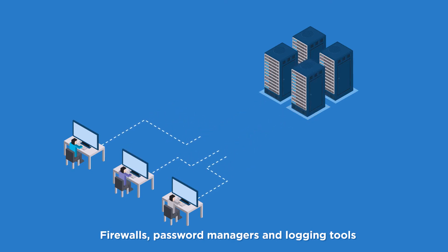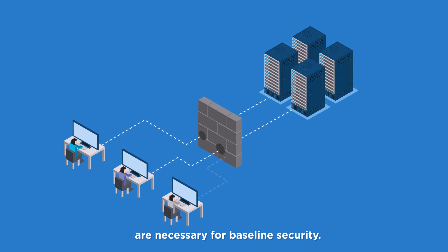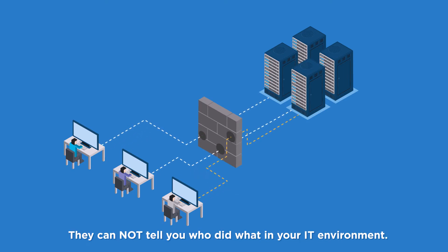Firewalls, password managers, and logging tools are necessary for baseline security. But they cannot control privileged activity. They cannot tell you who did what in your IT environment.